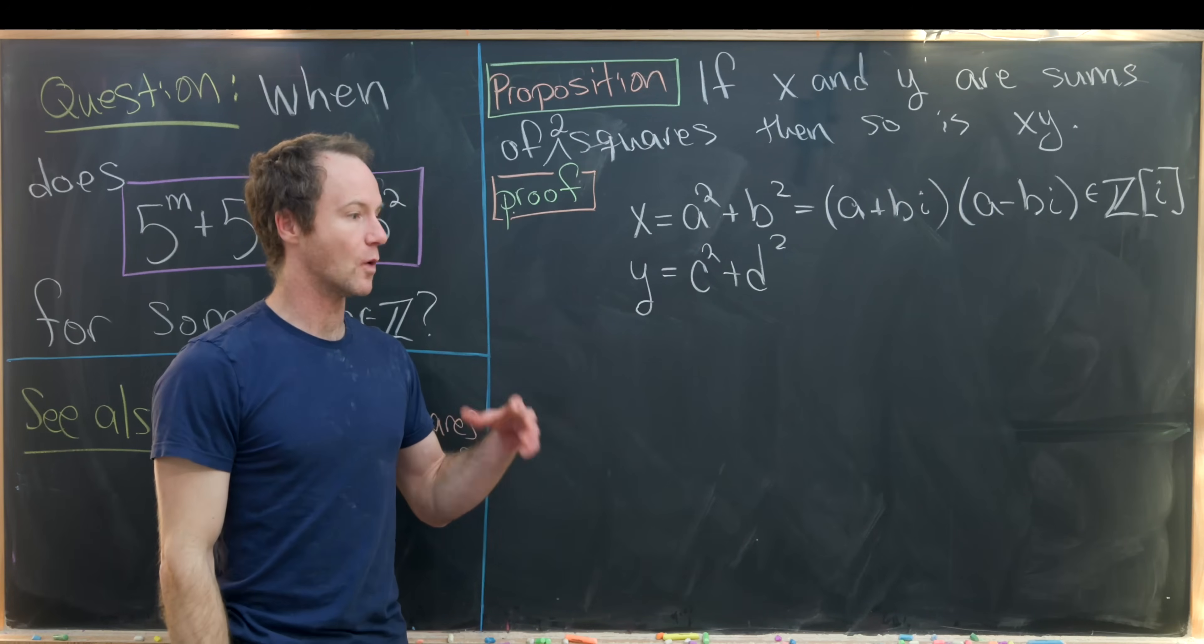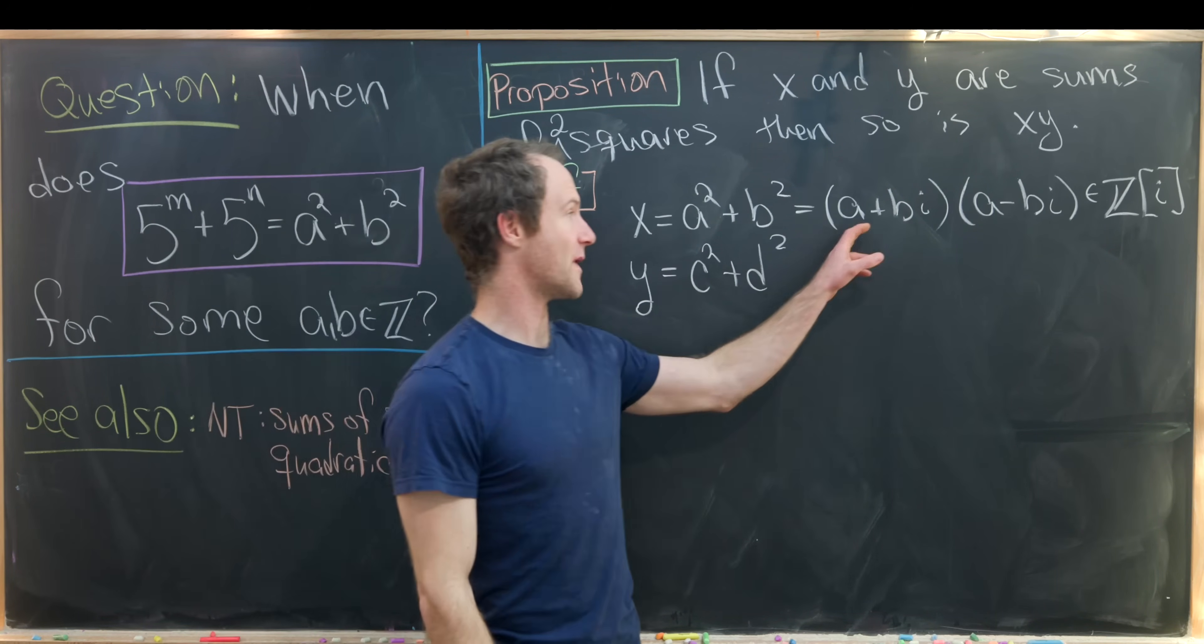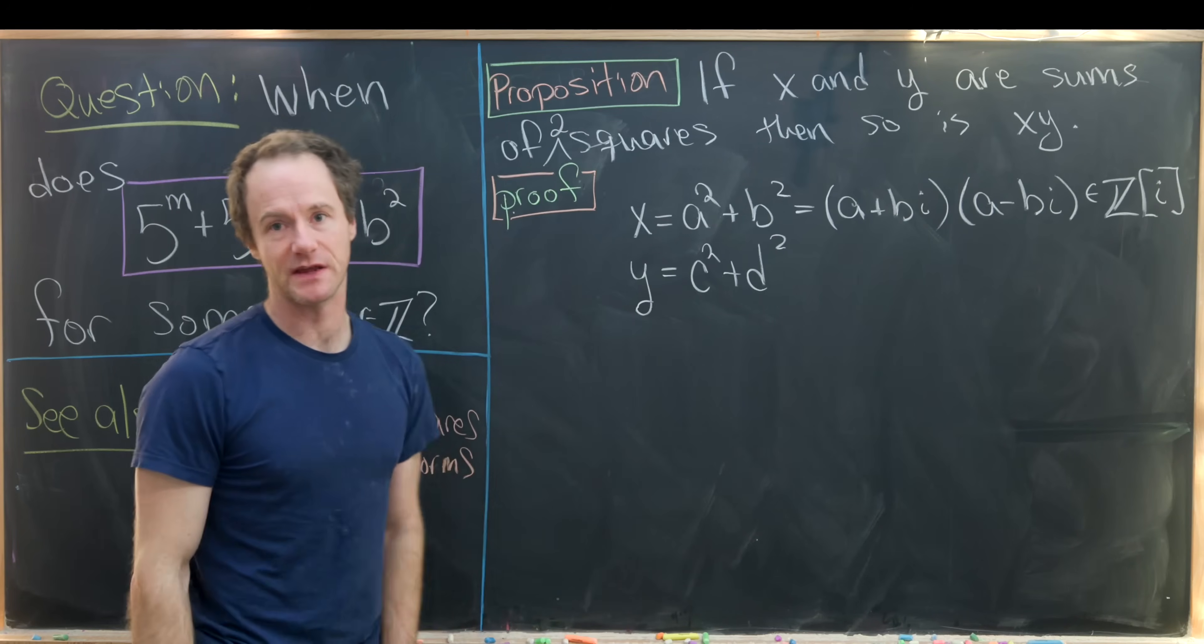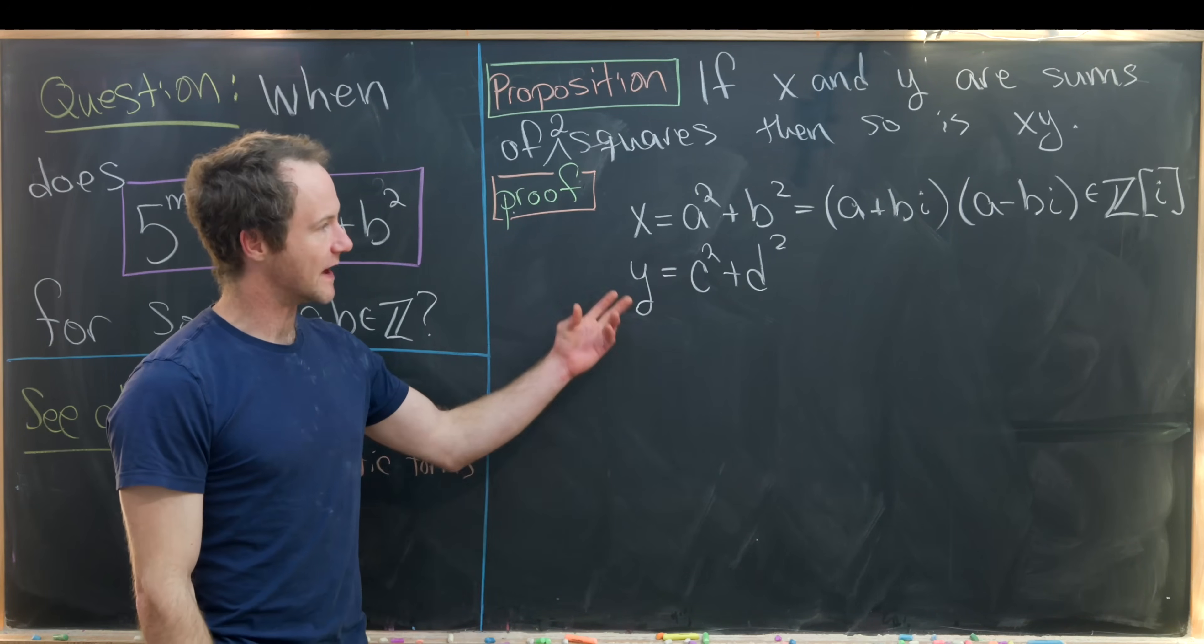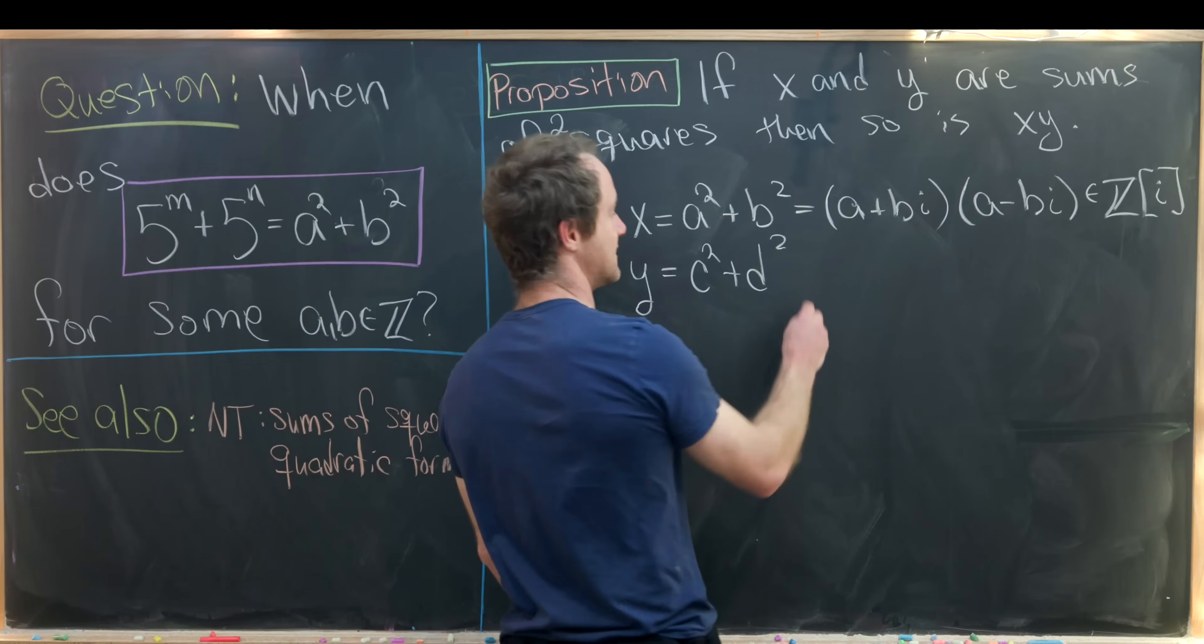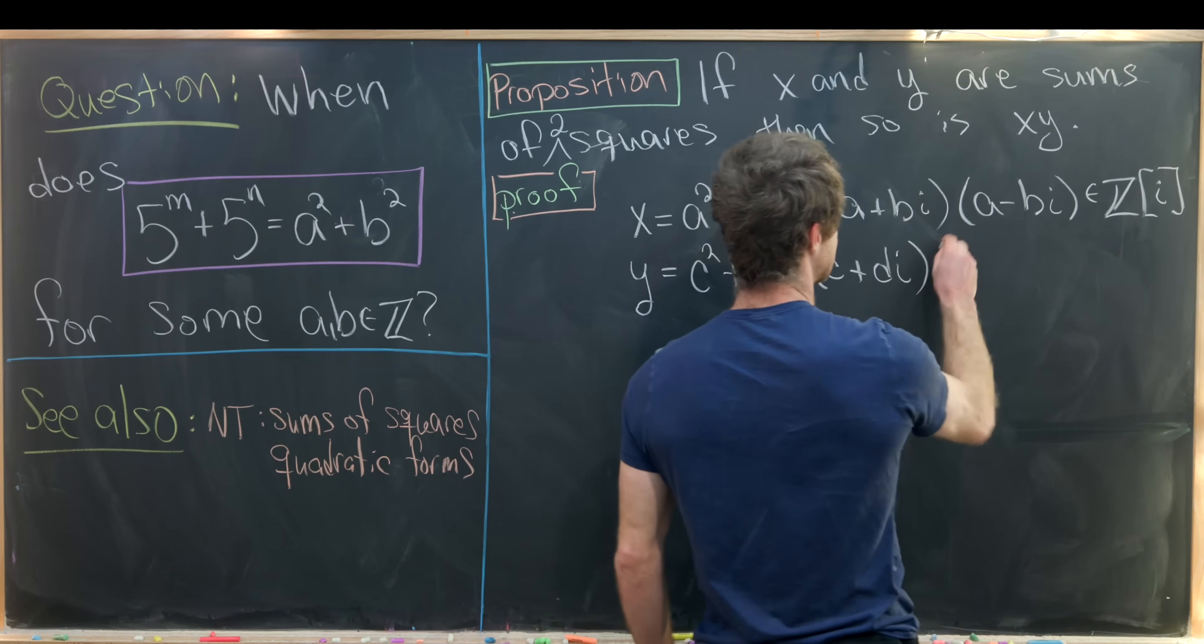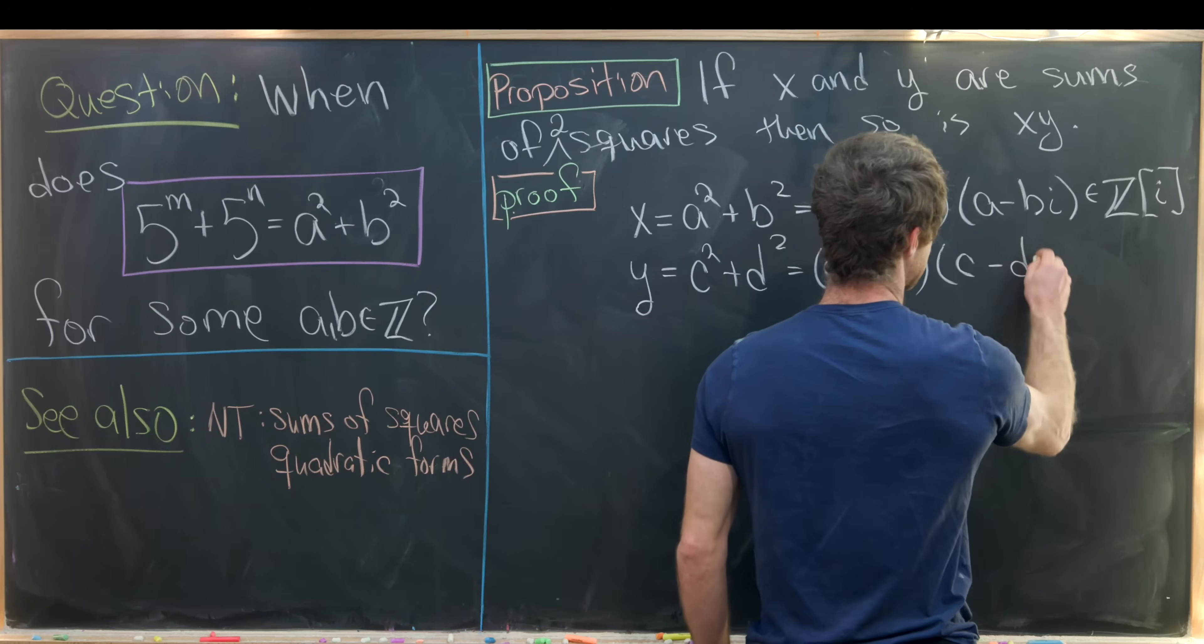So Z adjoin i, or in other words the Gaussian integers, that's everything of the form a plus bi where a and b are integers. Now we can similarly factor c squared plus d squared in this ring as c plus di times c minus di.